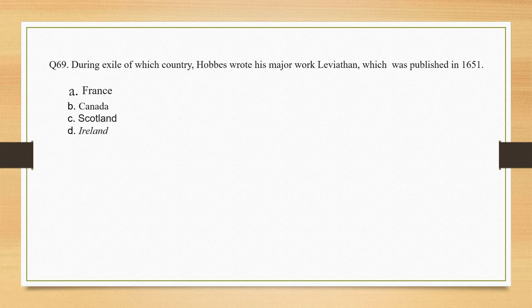During the exile of which country did Hobbes write his major work Leviathan, published in 1651? The correct option is option A: France.